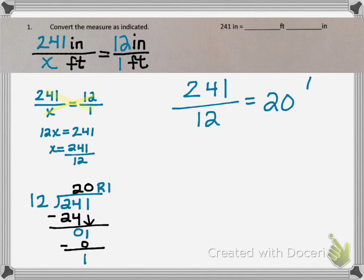Let's look at our answer here. 20 remainder 1 means that the improper fraction 241 over 12 is equal to the mixed number 20 and 1 twelfth.